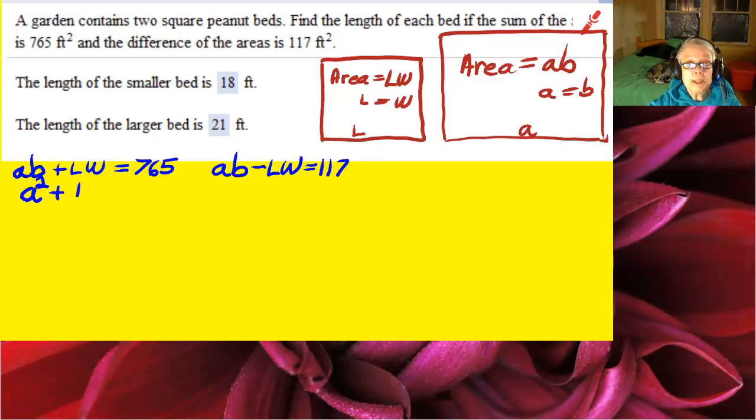However, B equals A and W equals L because we're dealing with squares, so we'll have A squared plus L squared equals 765, and A squared minus L squared equals 117.